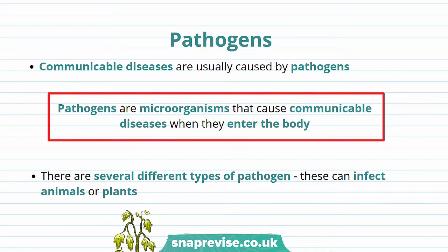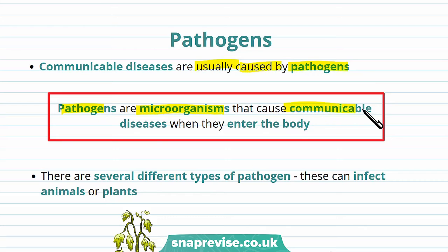In another video we talk about communicable diseases. We discuss that communicable diseases are diseases that are spread from person to person or from animals to people, and these are usually caused by pathogens. But what are pathogens? Pathogens are defined as microorganisms that cause communicable diseases when they enter the body. It's important to remember that most microorganisms don't harm animals or people; however, the ones that do are called pathogens.